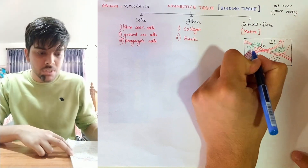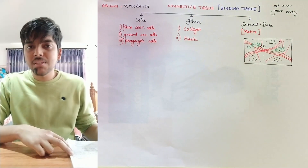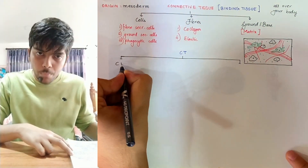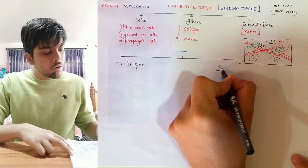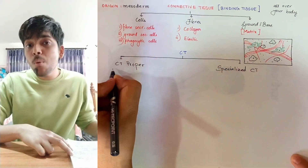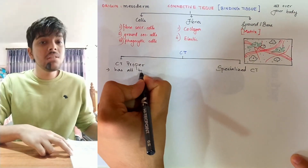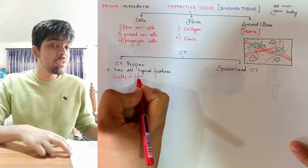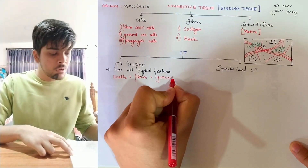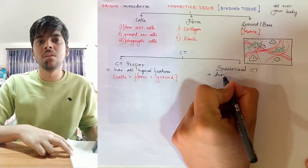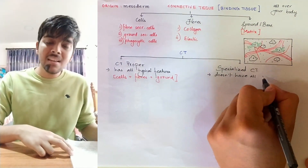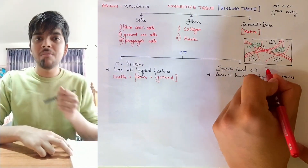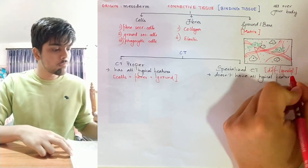The ground of connective tissue is made up of polysaccharides. Now let's look at the various types of connective tissue. Connective tissue can be classified into two major types: connective tissue proper and specialized connective tissue. Connective tissue proper includes all the typical features — presence of cells, fibers, and ground. Specialized connective tissue, on the other hand, doesn't necessarily follow all typical features; for example, blood does not contain fibers but is still a fluid connective tissue.